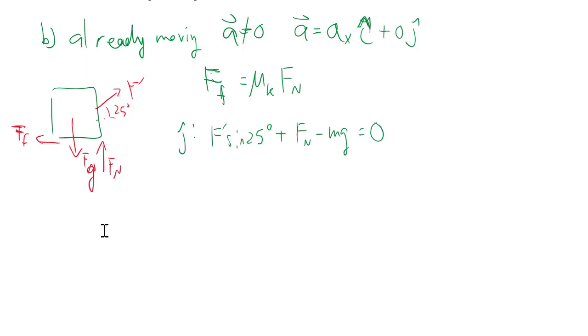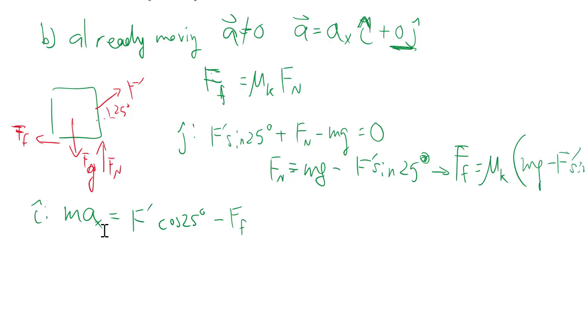But what we do know is Fn is still equal to this expression here because you still have zero acceleration in the j hat direction, which leads you to a certain expression for your kinetic friction. When you look at the i hat, you now have an acceleration. So that's not zero. But this time you do know how big your F prime is. So we can just solve for the acceleration. Being careful with the brackets and the double negative as you punch in your calculator.